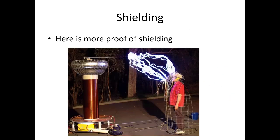Here's more proof of shielding: a man is getting zapped by a massive Van de Graaff generator and he's fine. He'll feel the heat — he's probably sweating, and he has earphones on so he doesn't go deaf — but he's protected because the charge goes around him to the ground.